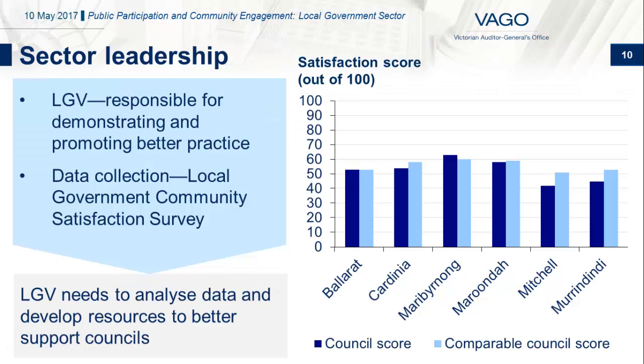LGV is responsible for promoting better practice in public participation to the local government sector, as well as reflecting better practice in a range of its own activities. LGV coordinates the statewide local government community satisfaction survey. In 2015-16, four of the six audited councils scored lower than similar councils on community engagement. As you can see in the graph on this slide, scores range from 42 to 63 out of 100. Considering the relatively low scores, it would be beneficial for LGV to analyse the data and develop resources and initiatives that support councils to improve their practice.